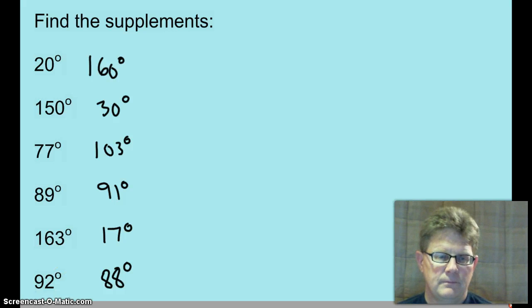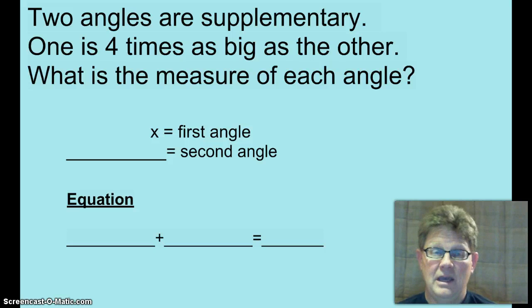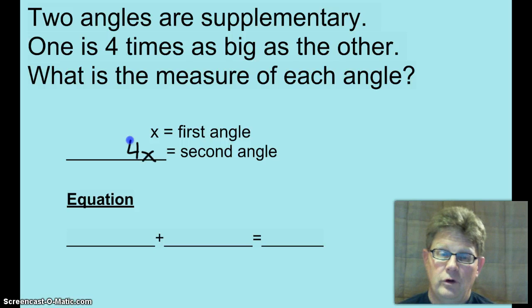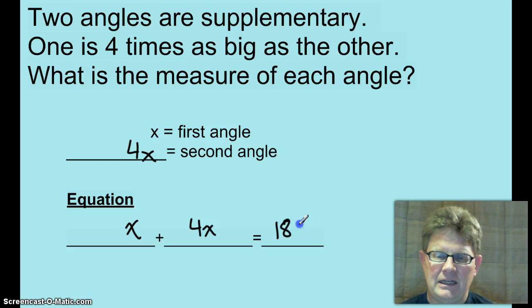Moving right along. Okay, once again, you may come across a story problem, and you'll have to assign variables to solve. Two angles are supplementary. One is four times as big as the other. So if x is the first angle, second angle, it's 4x. Your equation is x plus 4x equals 180 this time.